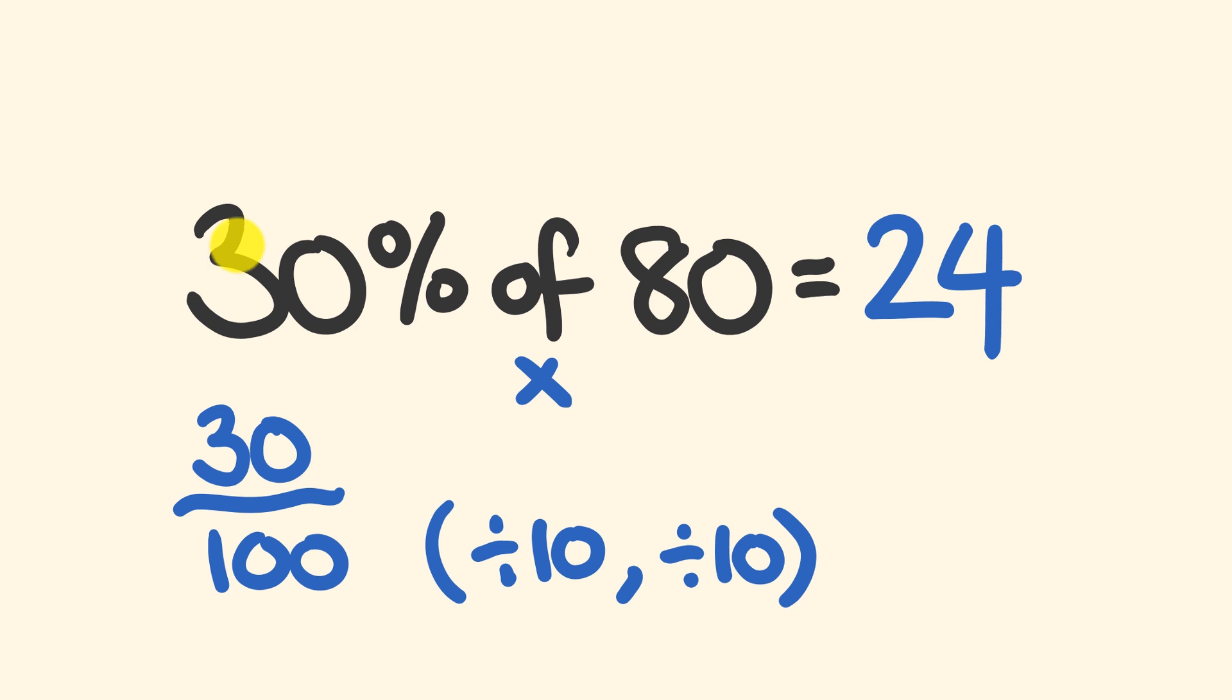So when we do this, 30 divided by 10, we simply get rid of the zero there and we end up with a 3. 80 divided by 10, we get rid of that zero, we end up with an 8. We end up with a simple question, which is 3 times 8, which is equal to 24. So 30% of 80 is the same as 3 eights: 24. Easy.